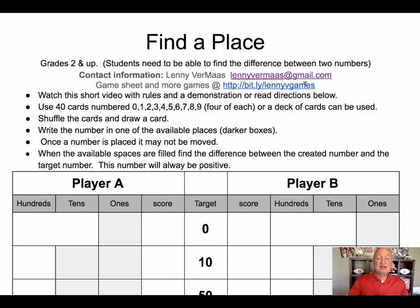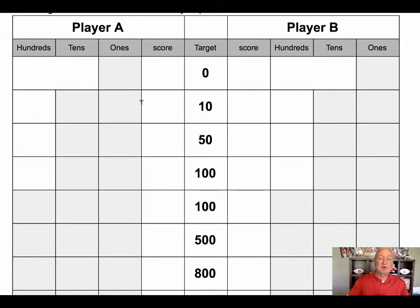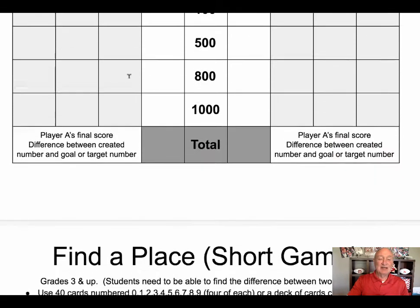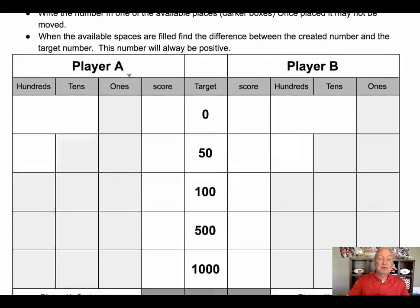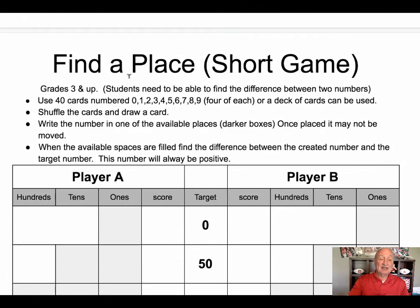If you go to my bit.ly website and download the game board for Find a Place, here are the rules at the top as well as a link. I have two game boards. This first game board has more targets, going from zero up to a thousand. And this is a shorter game board, which has just five targets that you're looking at.